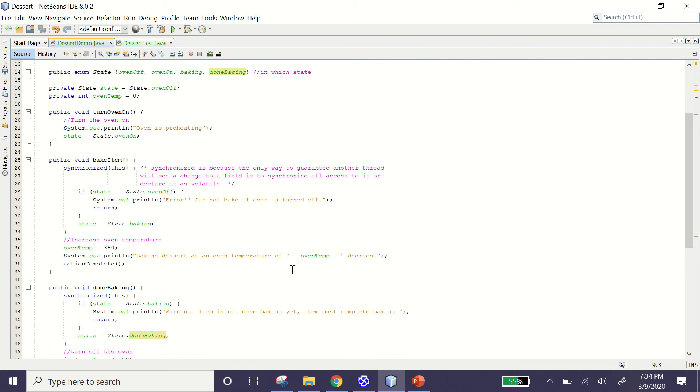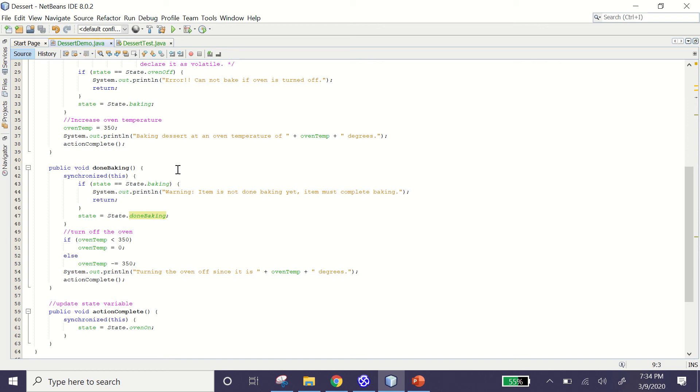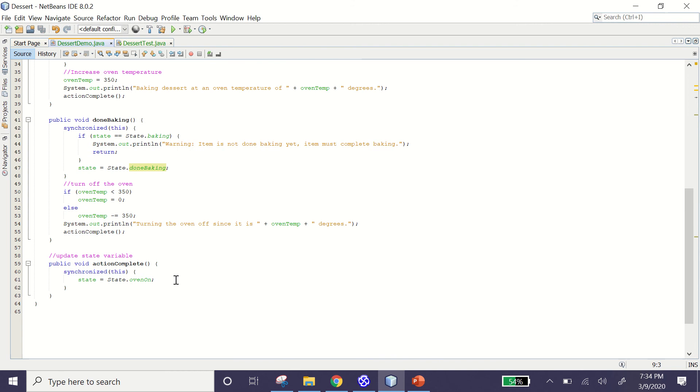If we scroll down a little bit, the done baking method is to stop baking the dessert. In this method, if the dessert is currently baking, it'll balk because the dessert isn't done if it's still baking. Finally, we have an action complete method to update the state variable.